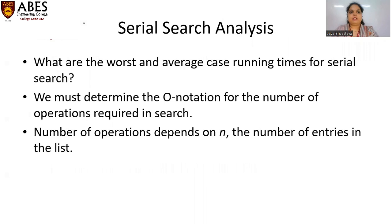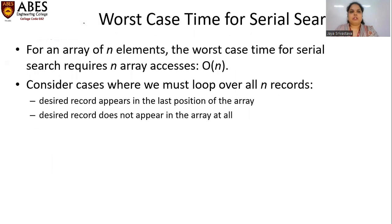In serial search analysis, what are the worst and average case running times? We must determine the Big-O notation for the number of operations required in the search, where the number of operations depends on n, the number of entries in the list. The worst case time for serial search on an array of n elements requires n array accesses. Consider cases where we must look over all n records: when the desired record appears in the last position, or when the desired record does not appear in the array at all.